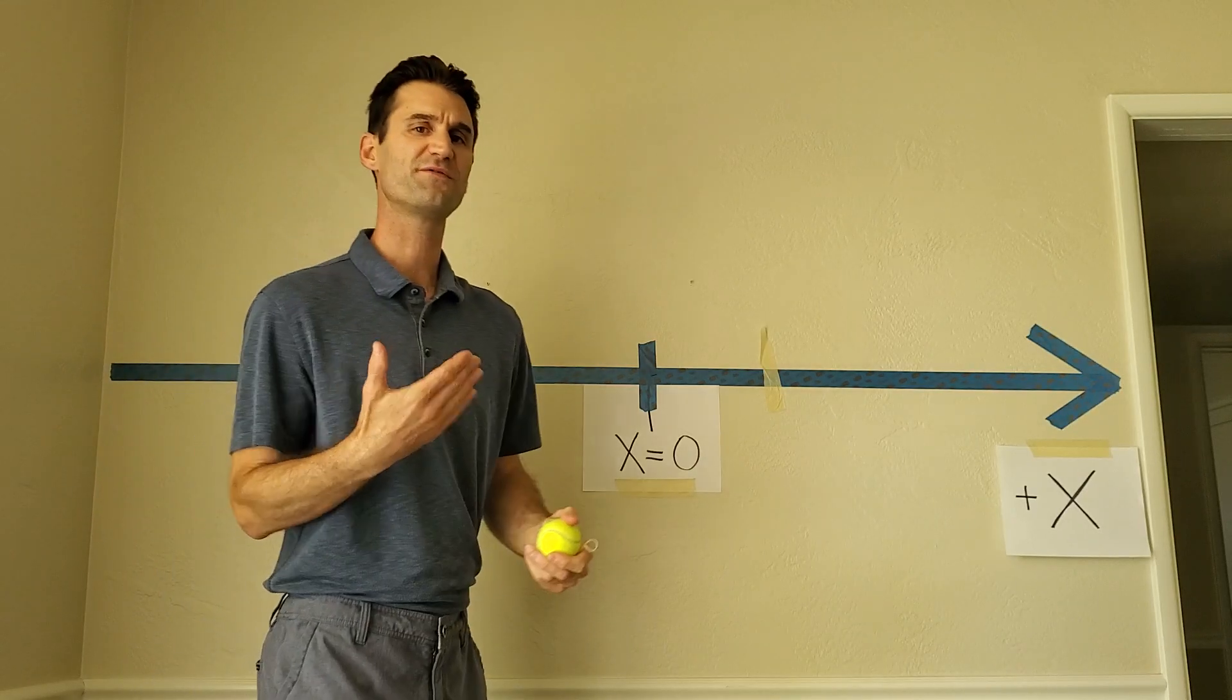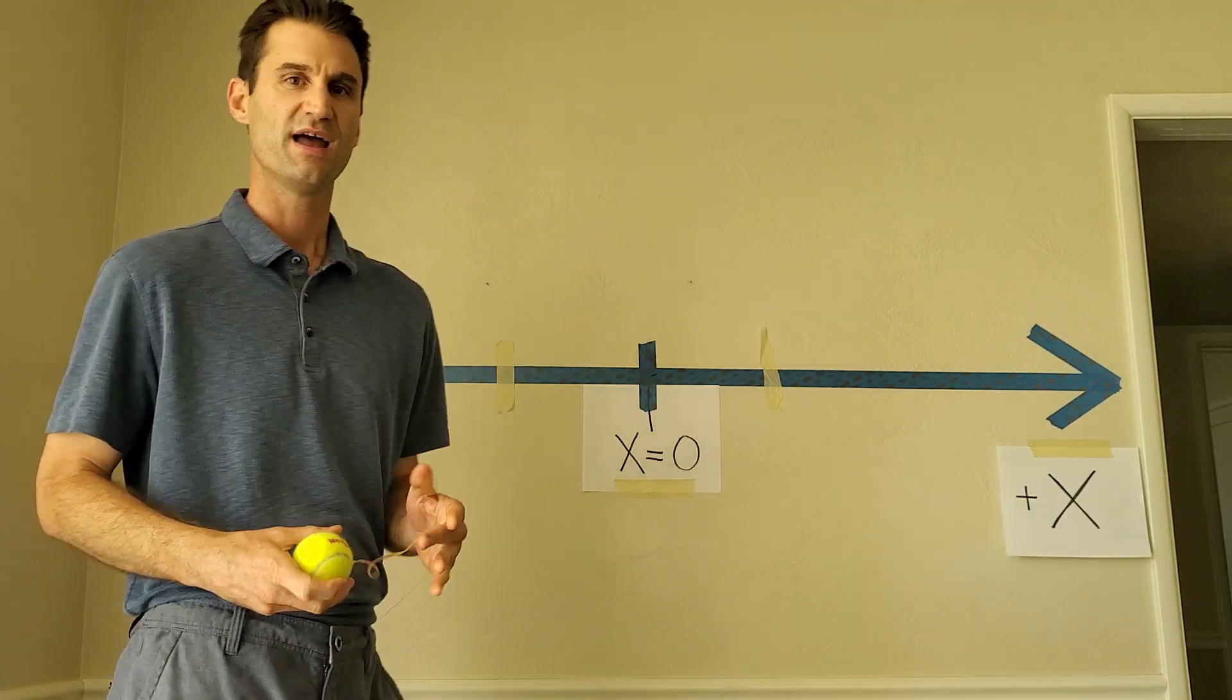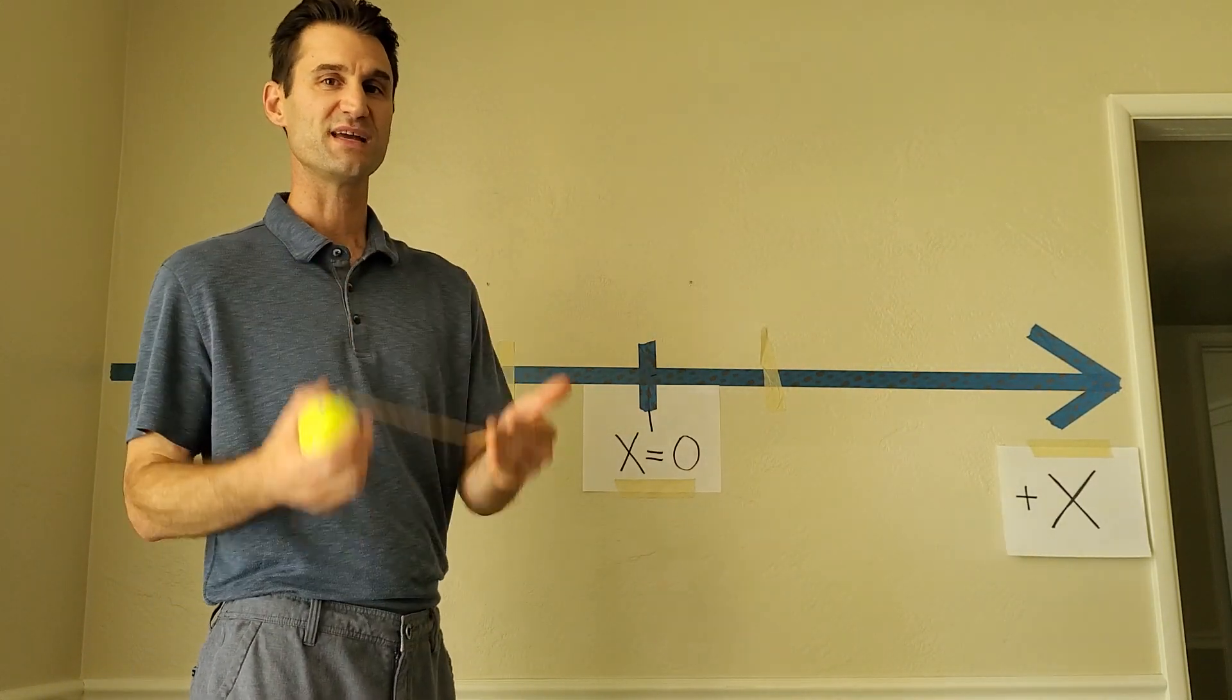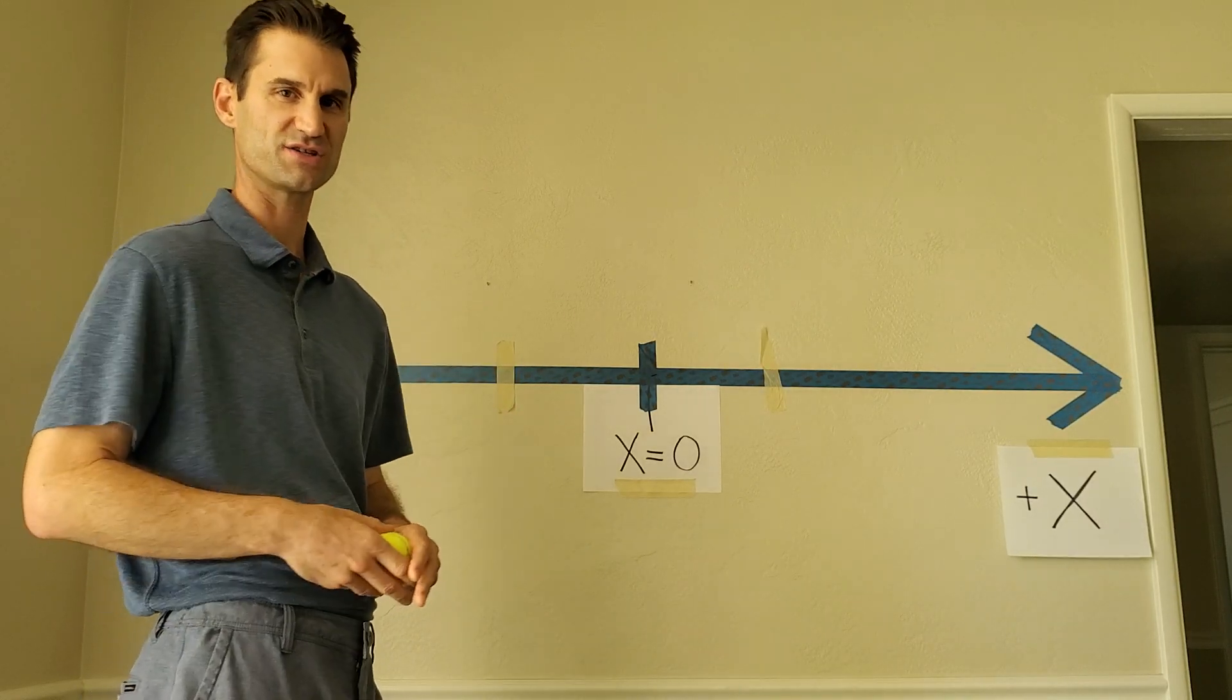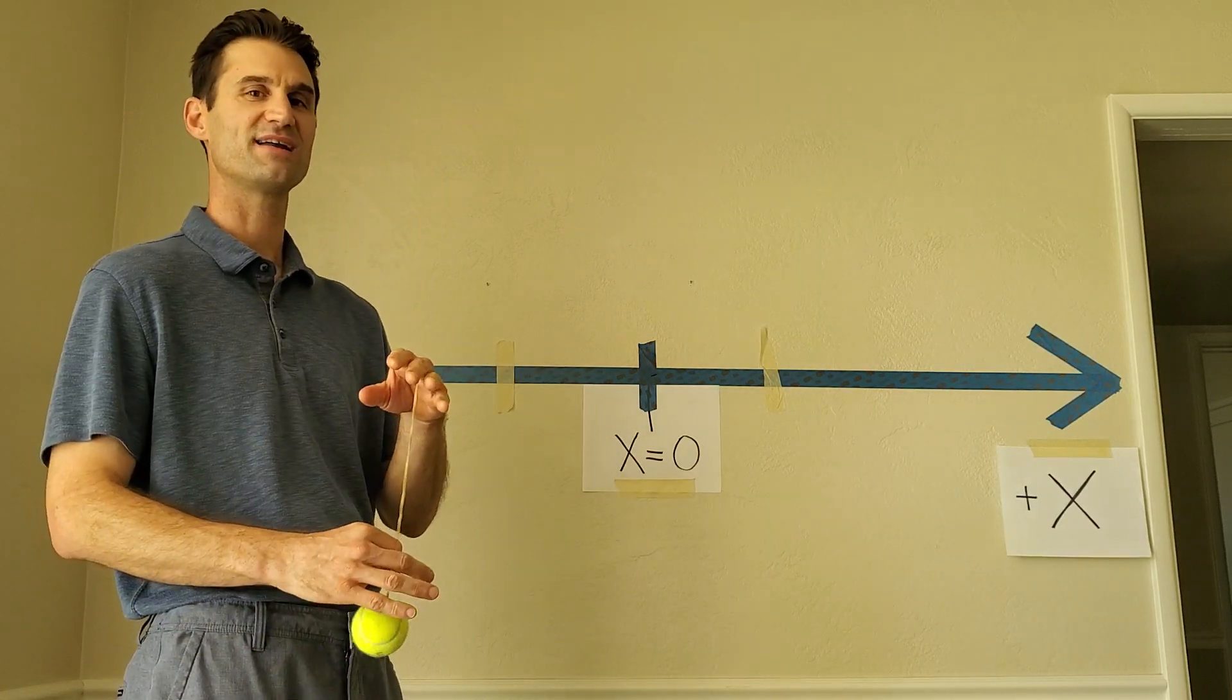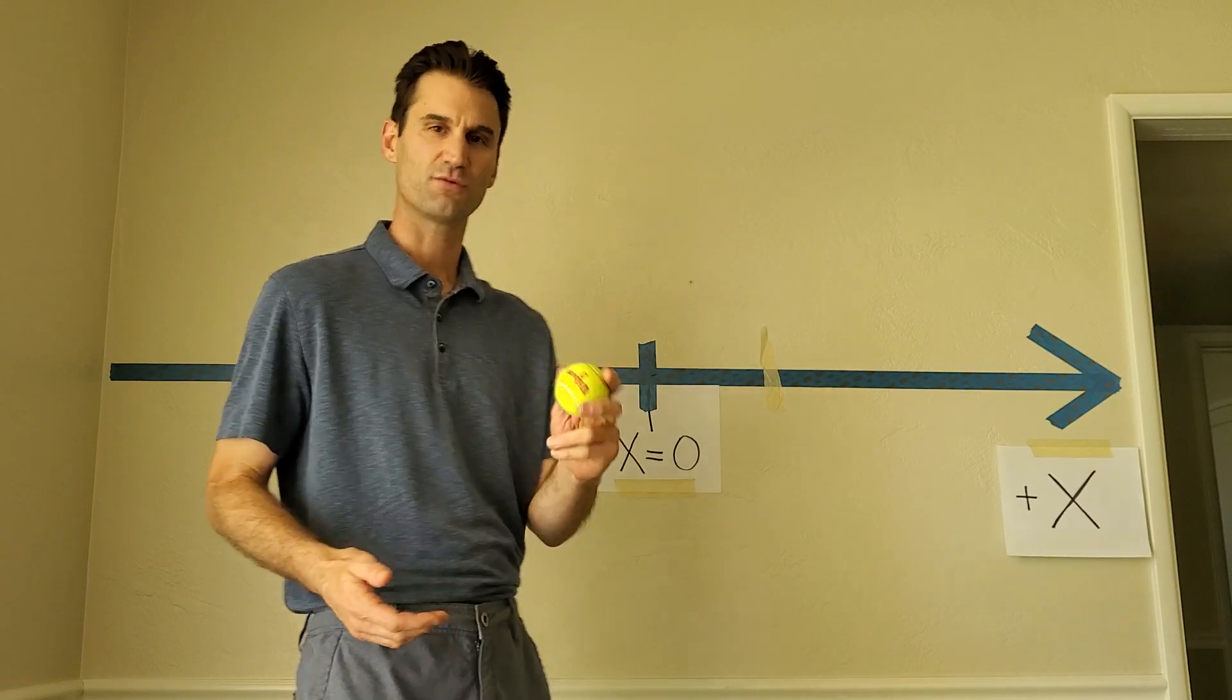There's a simple rule for figuring out the relative directions of velocity and acceleration. And the rule is this. If the object speeds up, then that means that the acceleration and velocity vectors point in the same direction. If the object slows down, that means that the acceleration and velocity vectors point in opposite directions. So watch it again.